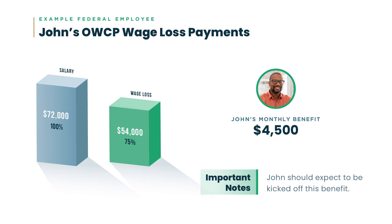Looking at John as our example: if he's receiving wage loss, he has two children, so he gets the 75% calculation — $54,000 annually, or a monthly benefit of $4,500. However, it is very important to remember that workers' compensation will be trying to get you back to work as soon as possible. This benefit should be considered temporary and not a permanent benefit in any way. We don't encourage people to look at wage loss as a long-term solution.